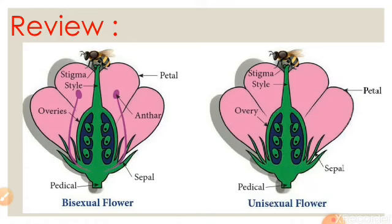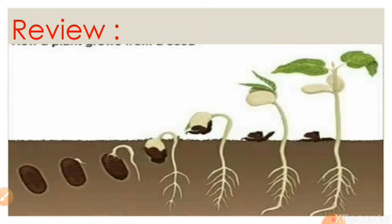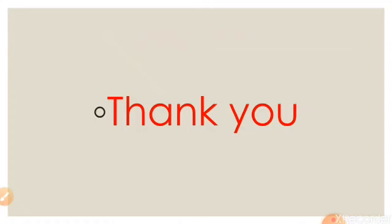There are two types of flowers: unisexual flowers and bisexual flowers. If calyx, corolla, stamen, and pistil are all present in the same flower, it is called a complete flower or bisexual flower. If any of these four parts is missing, it is called an incomplete flower or unisexual flower. After pollination and fertilization, the flower changes into a fruit, and fruits have seeds. With the help of these seeds, new plants arise — this is called sexual reproduction.